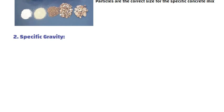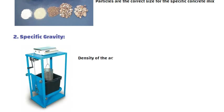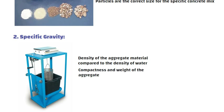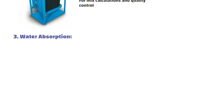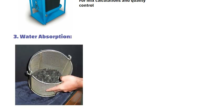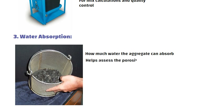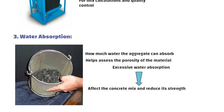2. Specific Gravity: This test measures the density of the aggregate material compared to the density of water. Specific gravity helps in understanding the compactness and weight of the aggregate, which is important for mix calculations and quality control. 3. Water Absorption: This test determines how much water the aggregate can absorb. It helps assess the porosity of the material. Excessive water absorption may affect the concrete mix and reduce its strength.